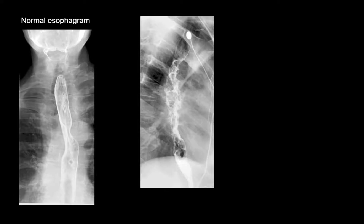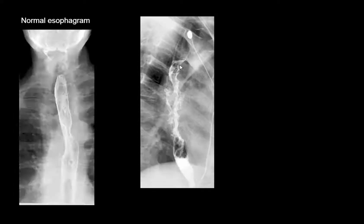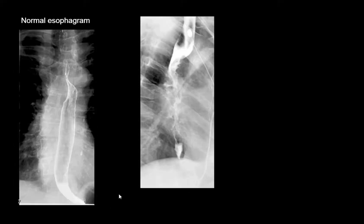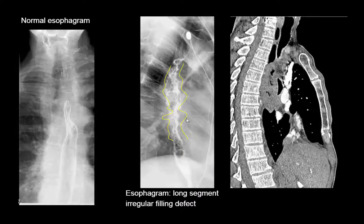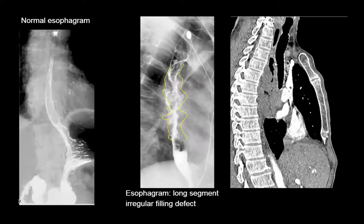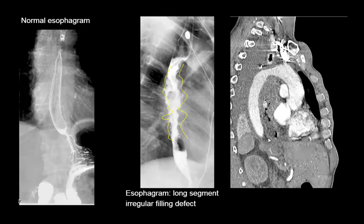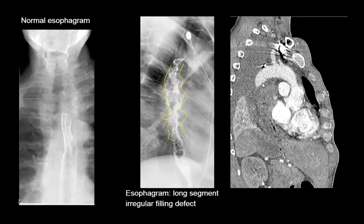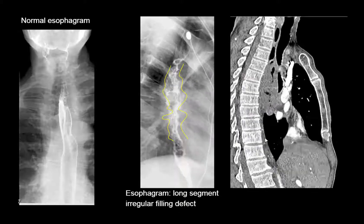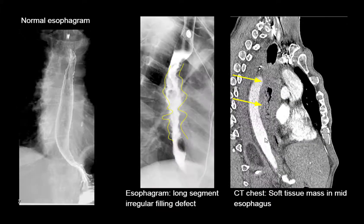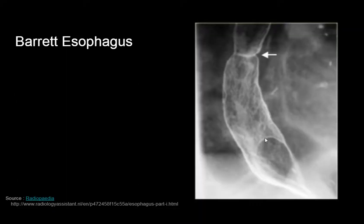In contrast to that, in this patient there are abnormal findings. There's an irregular filling defect along a long segment of the mid-esophagus, corresponding to a soft tissue mass along the mid-esophagus as seen on this chest CT, consistent with the patient's new diagnosis of esophageal cancer.